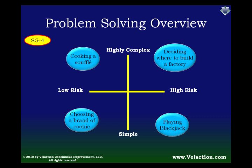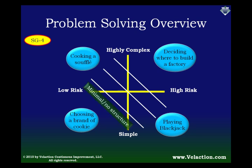So the further up and to the right the problem lies, the more structured a problem-solving approach you will need to take. Let's break this grid into sections. Each section requires a bit more effort. You would be unlikely to go through an 8D or full Kaizen process just to pick out a box of cookies or to make a quick daily improvement. The next layer of complexity or risk likely requires a loosely structured problem-solving effort. As the problem gets even more difficult, you might see a structured approach with some shortcuts applied. But as problems reach the complicated, risky quadrant, you will want to use a formal process. Most week-long Kaizen projects fall into this category.